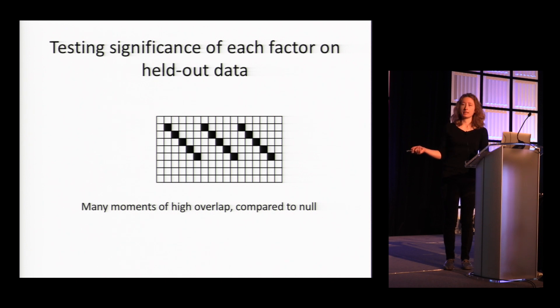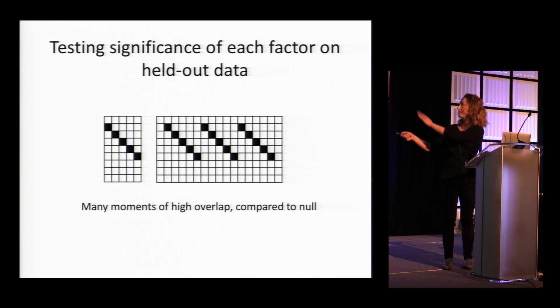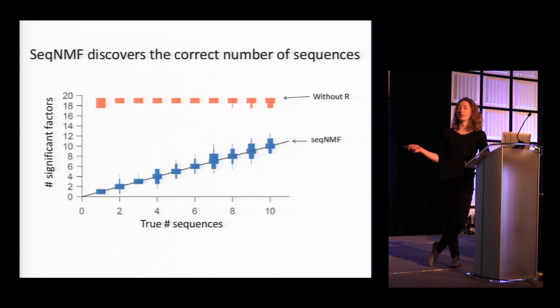We're also able to test the significance of each factor that we extracted on held out data. Let's say we extracted this factor in a different data set and wanted to see whether that factor is present in held out data. We pass the pattern over the data and see if there are moments of exceptionally high overlap. We can compare this to a case where we shuffle the factors, shuffle the timing of these neurons, and assess the significance. Using this, we were able to test whether SeqNMF could correctly determine the number of sequences in simulated data sets. We simulated data sets with one through ten sequences and measured how many significant factors SeqNMF extracted. Almost all the time SeqNMF extracts the correct number of factors.